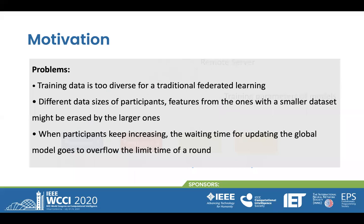However, we can see some problems existing in this scheme. The training data is too diverse for traditional federated learning — the data inside different network LANs are so different from each other. Second, different data sizes of the participants; for example, features from the ones with smaller datasets will be erased by the larger ones. Third, when participants keep increasing, the waiting time for updating the global model goes to overflow the limit time of a round.